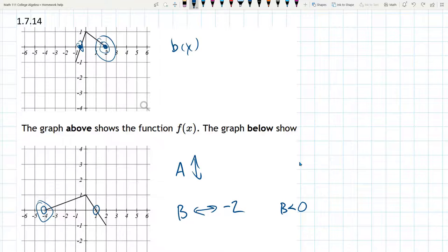Well, we would stretch by negative 2, but that means that b is the opposite. So the opposite of making something multiplied by 2 is multiplied by negative 1 half. So b is negative 1 half.